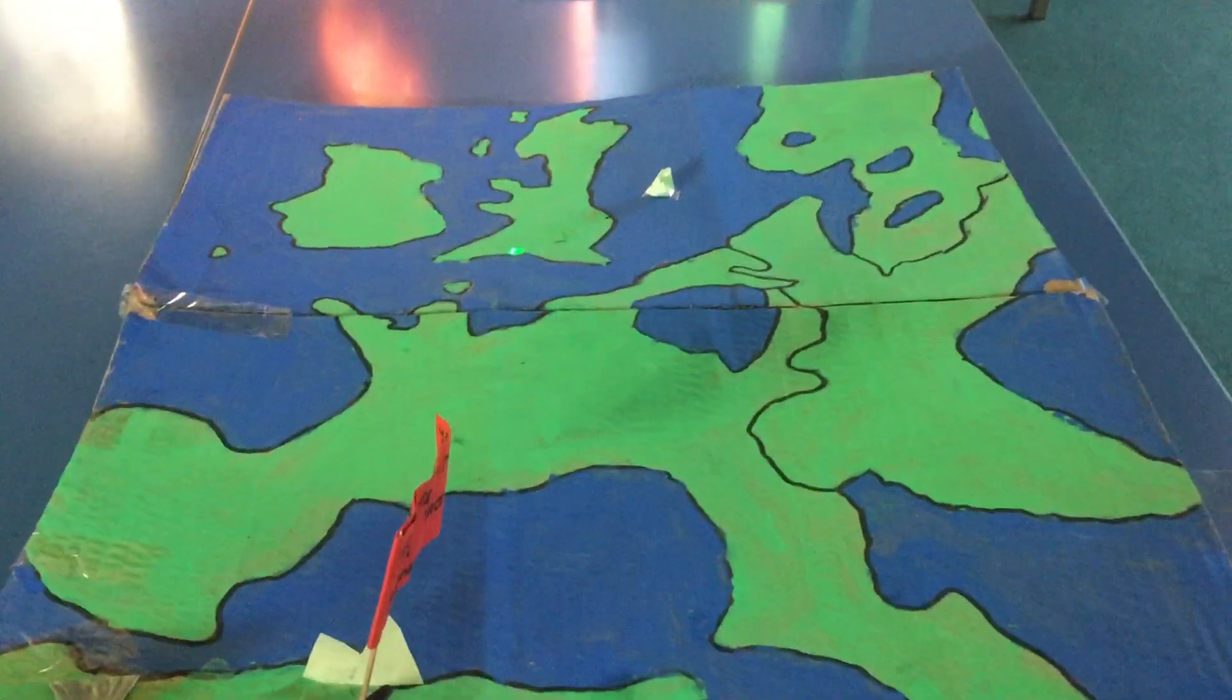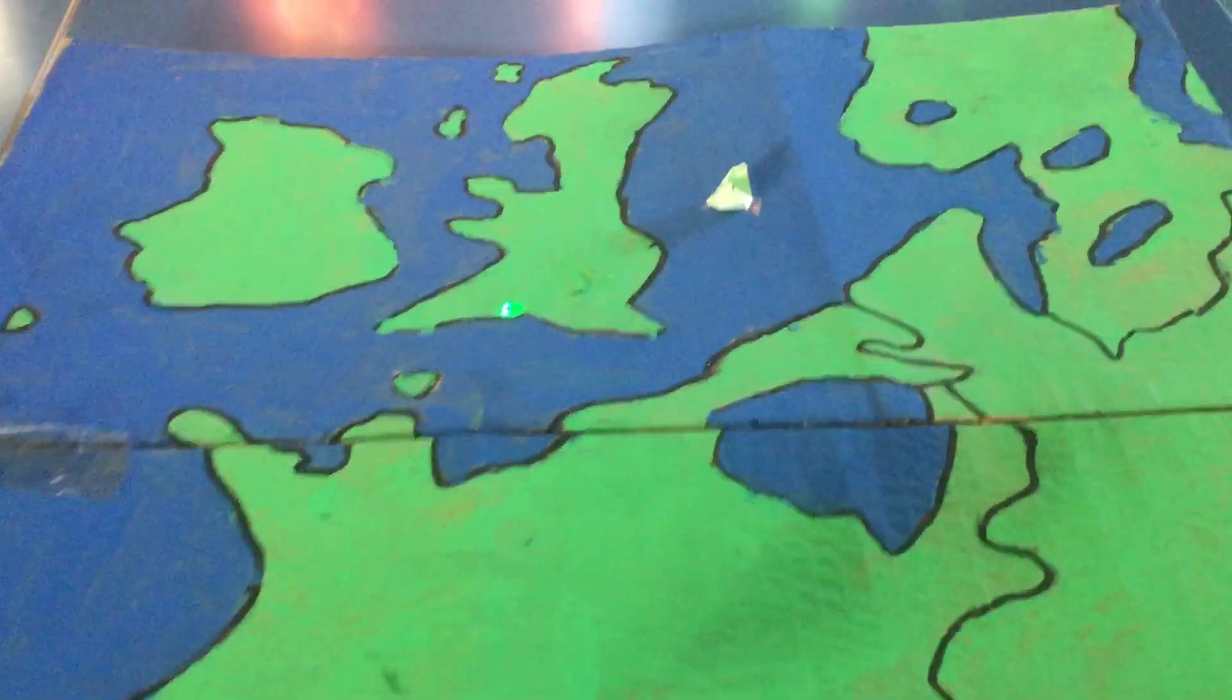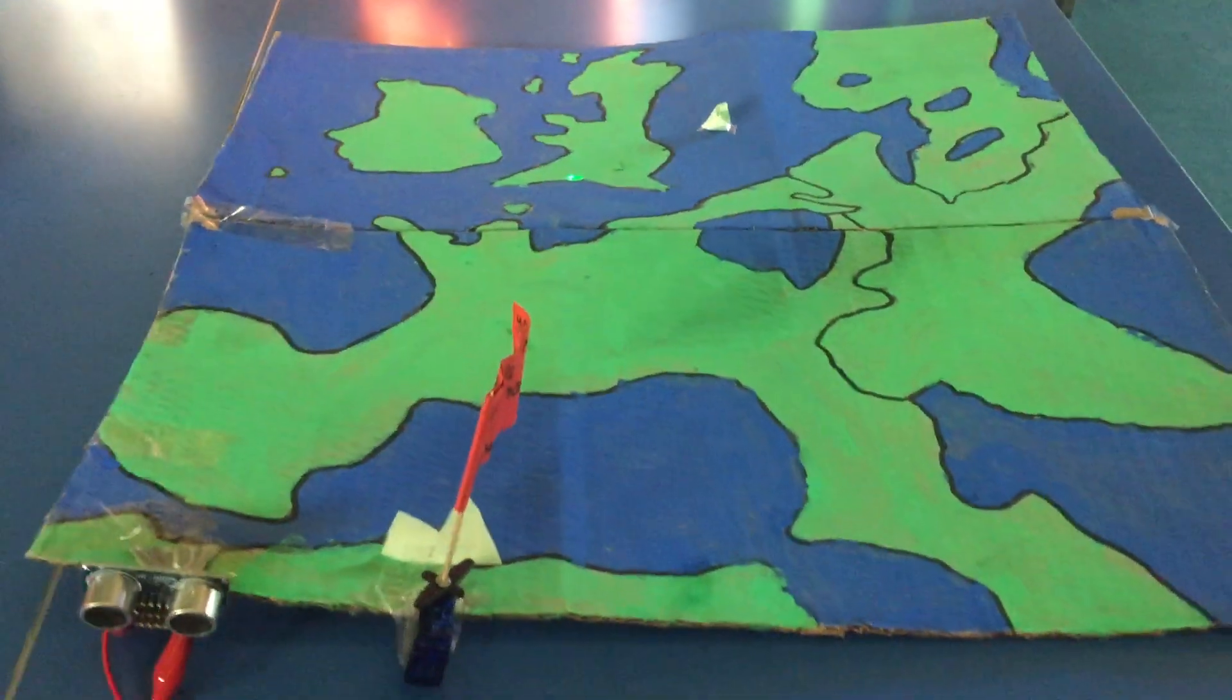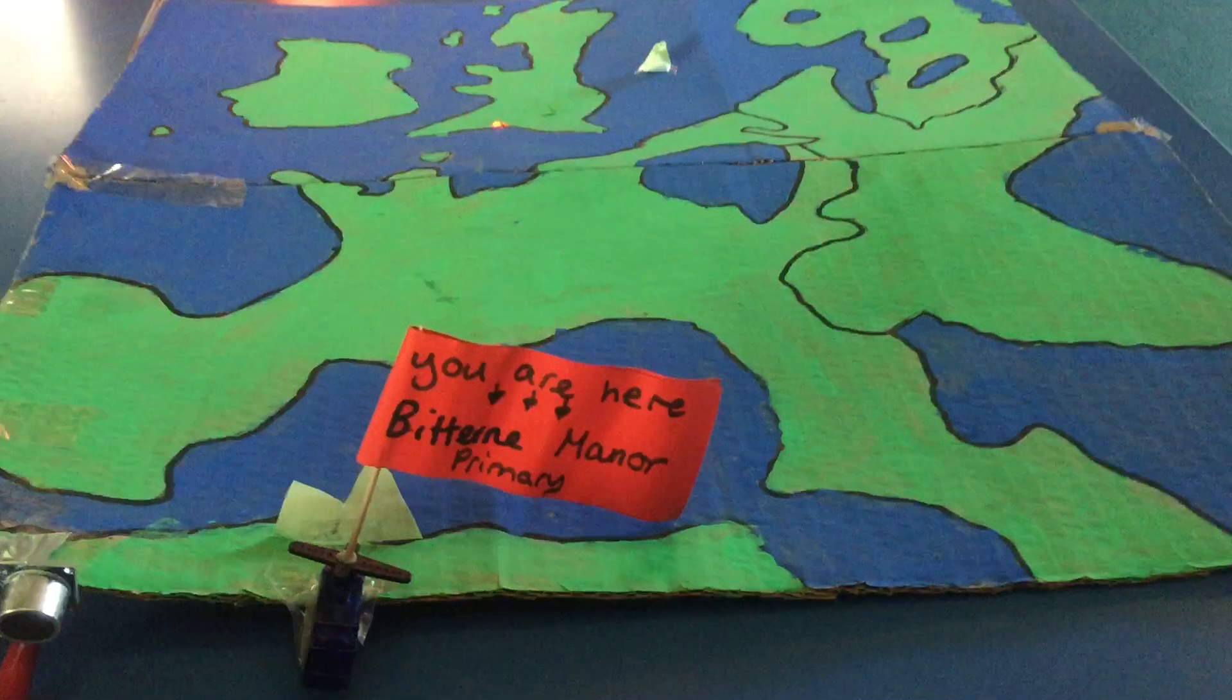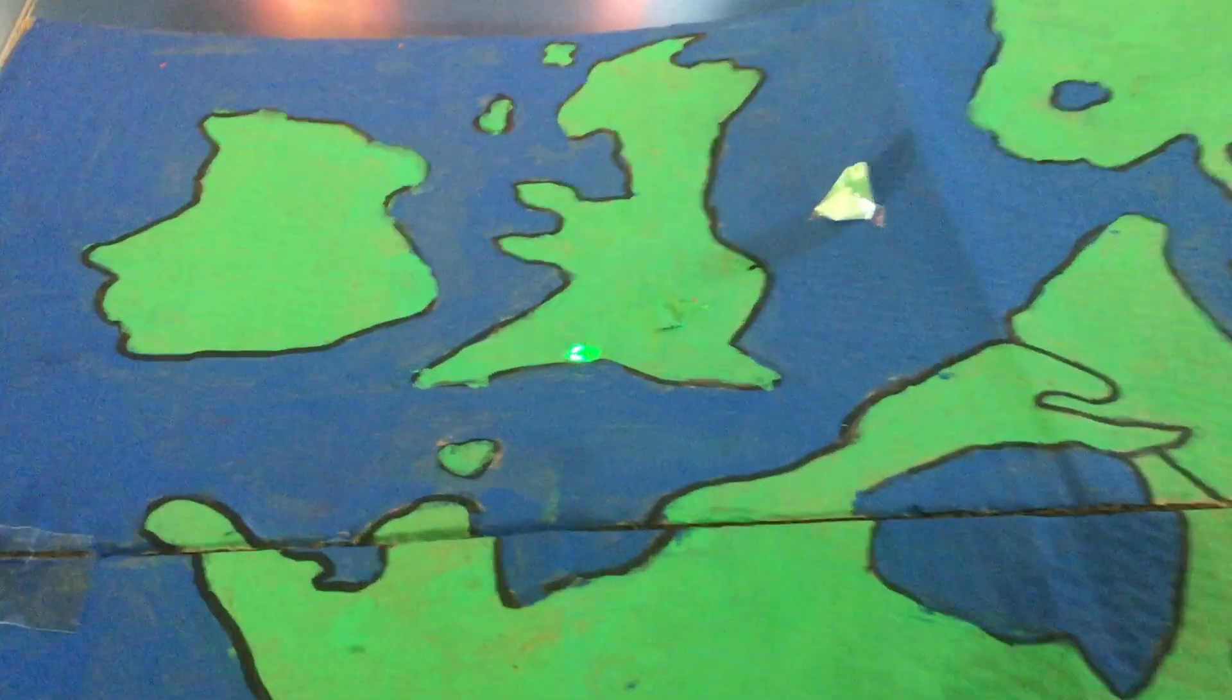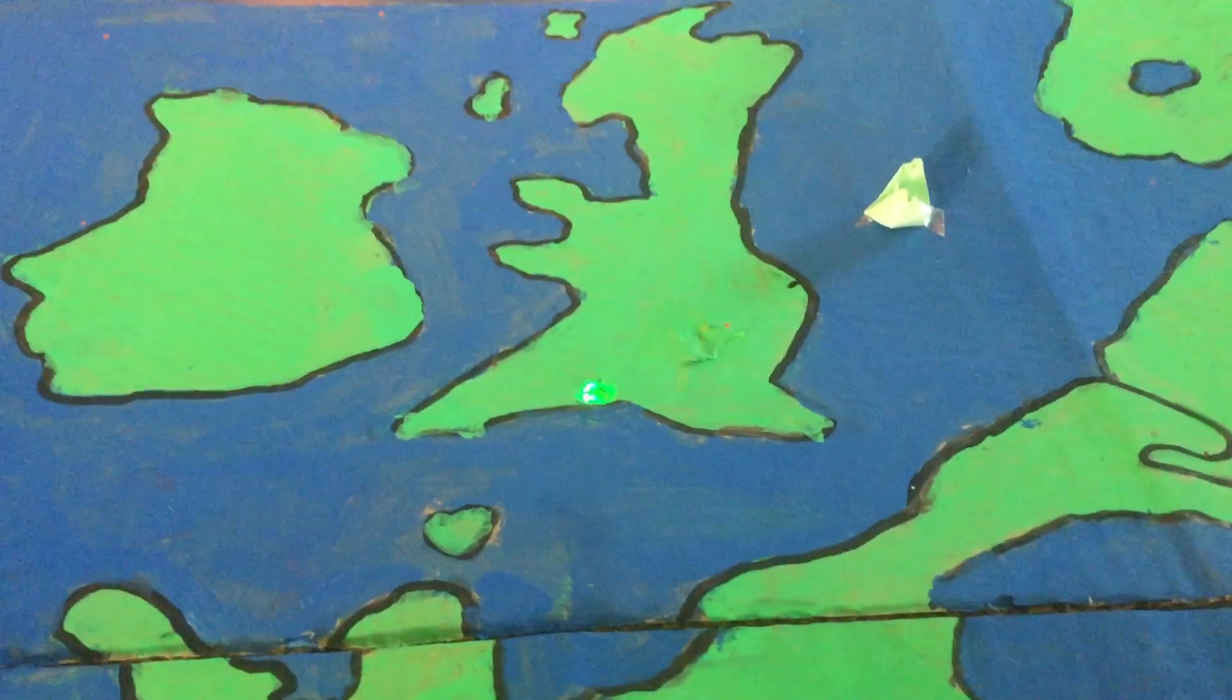This is a map. If you ever were unsure of where you are, you can just walk up to this map and simply trigger the proximity detector which says you are here, Bitten Manor Primary. And as you can see the light changes red to show you where you are.